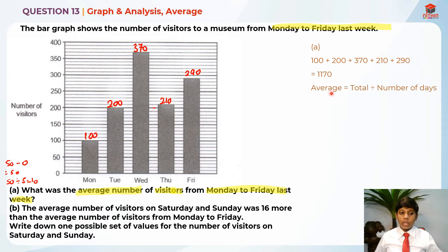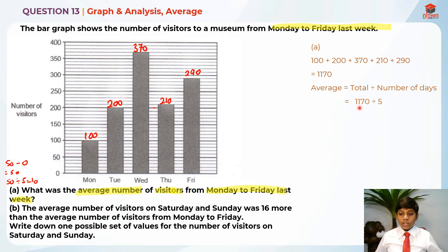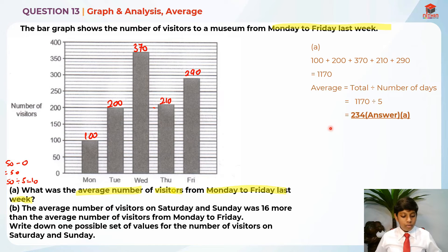After that, we know that average is equal to total divided by the total number of days. There are five days, so 1170 divided by 5 is equal to 234. So 234 is the average.